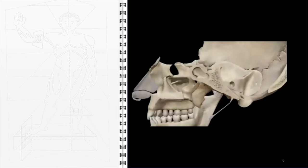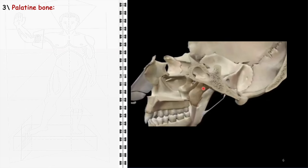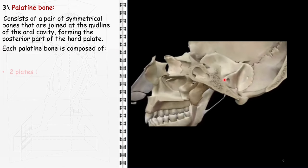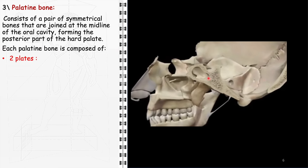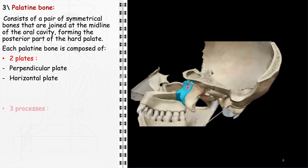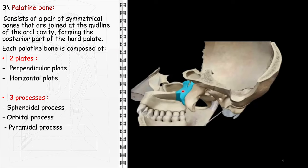The palatine bone consists of a pair of symmetrical bones that are joined at the midline of the oral cavity, forming the posterior part of the hard palate. Each palatine bone is composed of two plates and three processes. The two plates are the perpendicular plate, contributing to the formation of the lateral nasal wall and the nasal septum, and the horizontal plate, which forms the posterior portion of the hard palate. The three processes include the sphenoidal process, which articulates with the sphenoid bone; the orbital process, contributing to the floor of the orbit; and the pyramidal process, involved in the formation of the pterygopalatine fossa and the pterygoid process.